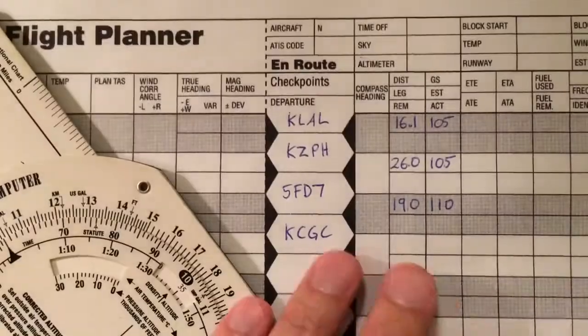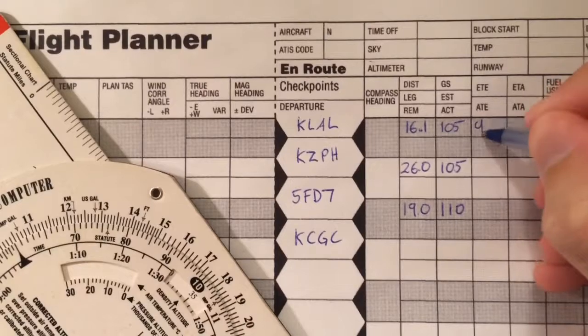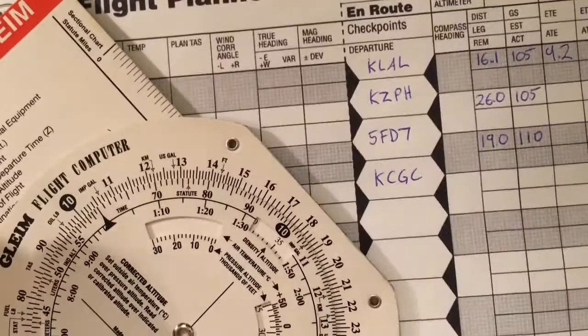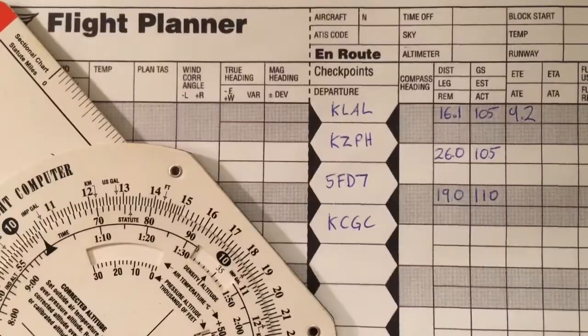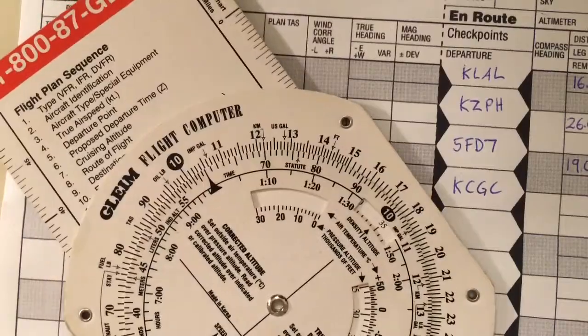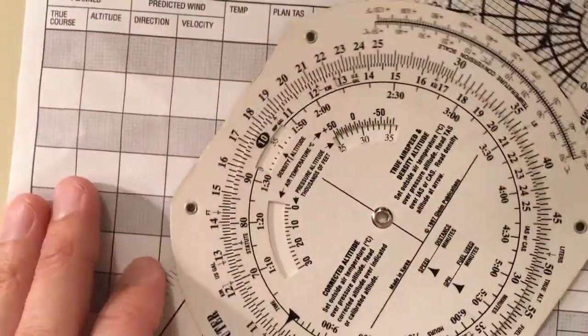Now, the advantage of doing it with the E6B is that now if our ground speed stays the same, we don't have to reset it. We can simply read another value. So our next distance is 26. So we're simply going to read distance over minutes.